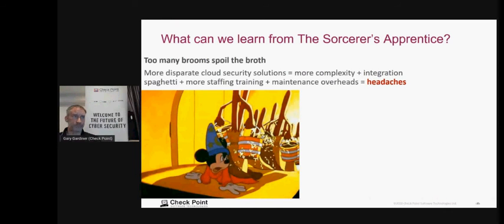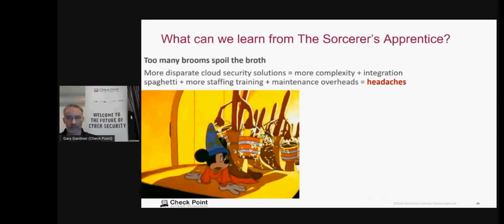From the Sorcerer's Apprentice — Mickey Mouse lost control of everything in the room because there was too much going on. What we need is a solution that looks at the entirety of your multi-cloud infrastructure and consolidates it into a single security platform. This reduces complexity, reduces integration overhead, requires fewer trained staff, and lowers maintenance costs.